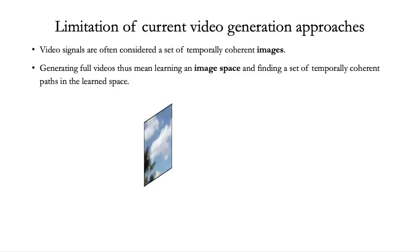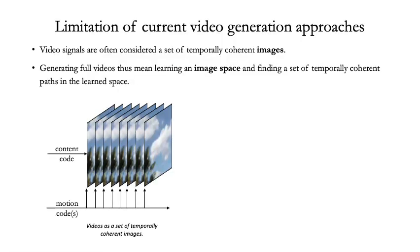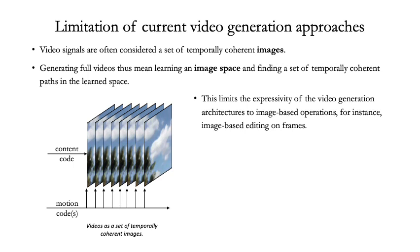Images are considered a complete signal. However, videos are often broken down as a set of a temporally coherent sequence of images. For instance, all the state-of-the-art video generation networks model videos as a sequence of images. Here, an image space is learned, and videos are then generated as temporally coherent paths in this image space. This limits the expressivity of video to image-based operations, for instance, editing on frames.